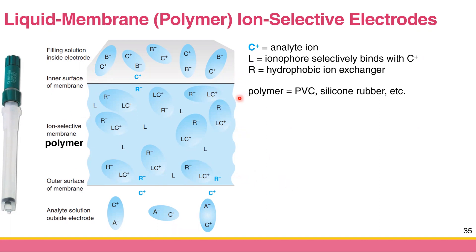So what are those somethings? The first thing you need is L. You can see there's a lot of L. What does L stand for? L stands for ionophore, which selectively binds with your analyte ion. For example, if you want to measure the cation C⁺, you need the ionophore L that can selectively bind with C⁺.